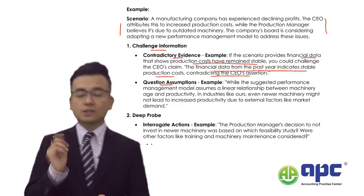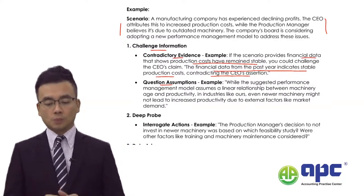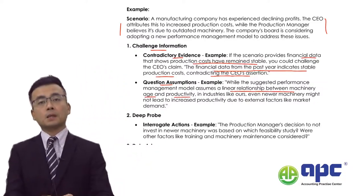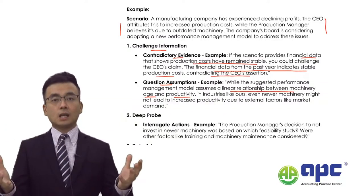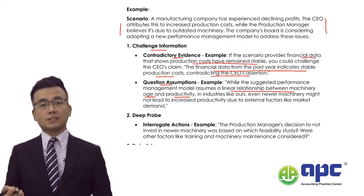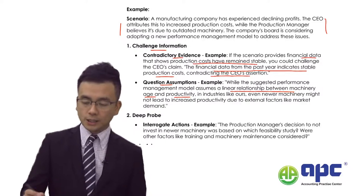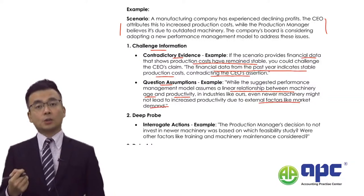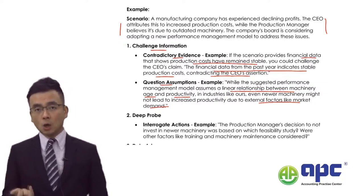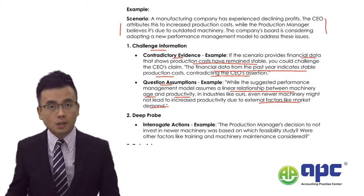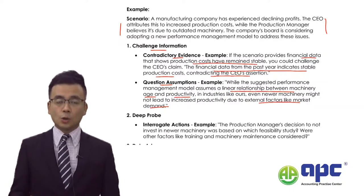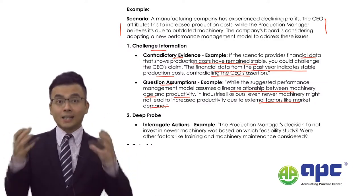You always need to question assumptions made by management. For example, we may be assuming a linear relationship between machinery age and productivity. Because the machine is old, it's not efficient — that makes sense. However, that doesn't make sense if customer demand or customer tastes have actually changed. It's very important to look out for clues from the external market. Maybe the customer no longer wants our product. Don't just assume a linear relationship between A and B in the APM paper.